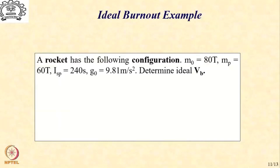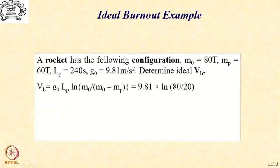Let us go through a simple example. Take a rocket with a lift-off mass of 80 tons, carrying 60 tons of propellant with an ISP of 240 seconds. Let us see what ideal burnout velocity we get. We use the expression g_0 × ISP × ln(m_0 / (m_0 − m_p)) and substitute these quantities.